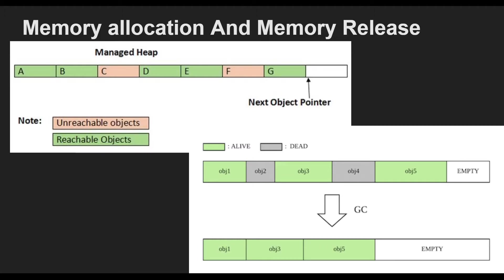When the application creates the next object, the garbage collector allocates memory for it in the address space immediately following the first object. As long as the address space is available, the garbage collector continues to allocate space for new objects in this manner. Allocating memory from the managed heap is faster than unmanaged memory allocation because the runtime allocates memory for an object by adding a value to a pointer — it's almost as fast as allocating memory from the stack. Because new objects allocated consecutively are stored contiguously in the managed heap, an application can access the objects quickly.